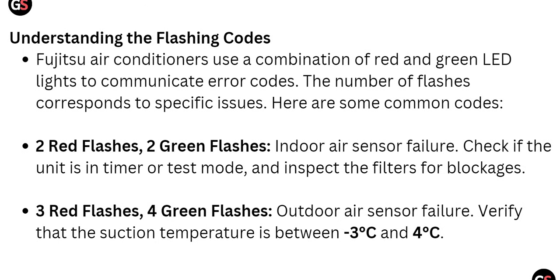Fujitsu air conditioners use a combination of red and green LED lights to communicate error codes. The number of flashes corresponds to specific issues. The first code is two red flashes and two green flashes, which indicates indoor air sensor failure.